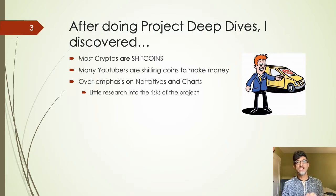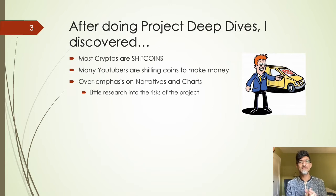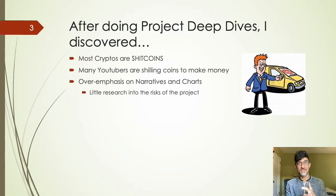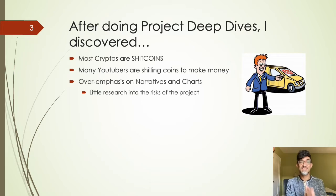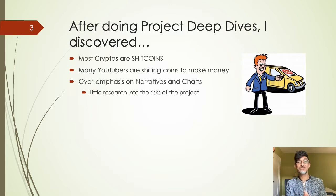After doing a project deep dive — moving from top-down to bottom-up — looking at individual projects like Polkadot and Cardano, I discovered that most shitcoins — and I'm not talking just about the 19,999 coins that are shitcoins, but even the top 10 and top 15 coins — most of them are shitcoins. It's pretty sad. And of course I'm excluding stablecoins, but even those have issues, like algorithmic stablecoins and Tether.